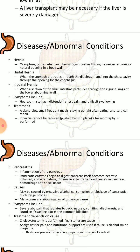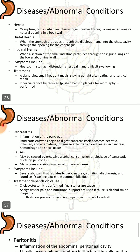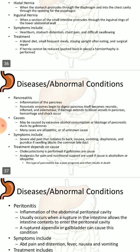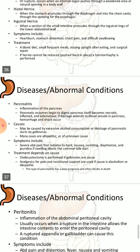A hernia or rupture occurs when an internal organ pushes through a weakened area or a natural opening in a body wall. A hiatal hernia is when the stomach protrudes through the diaphragm and into the chest cavity through the opening for the esophagus. An inguinal hernia is when a section of the small intestine protrudes through the inguinal rings of the lower abdominal wall. Symptoms include heartburn, stomach distension, chest pain, and difficulty swallowing. Treatment includes a bland diet, small frequent meals, staying upright after eating, and surgical repair if the hernia cannot be reduced.